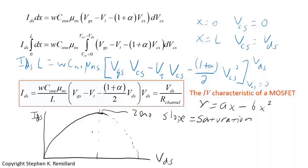Beyond the point where the slope is zero, called V_Dsat, the current doesn't decrease — it levels off. We call this voltage V_Dsat (following the book's notation). To find V_Dsat, we take the derivative of I_DS with respect to V_DS and set it equal to zero.